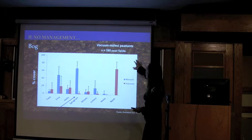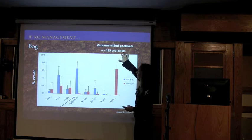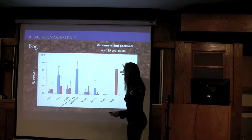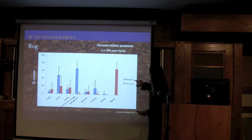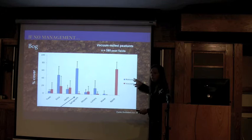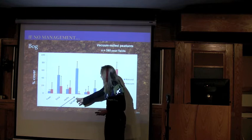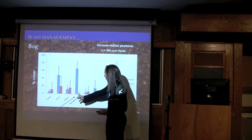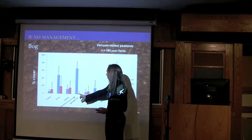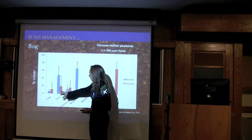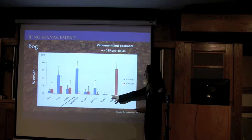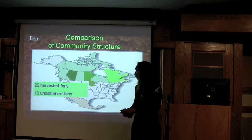We inventoried 395 abandoned peat fields across Canada, mostly in the eastern part where the industry is concentrated, and compared them to nearly 600 plots taken in natural peatlands across eastern Canada. In natural peatlands you find about 70-75% sphagnum coverage, whereas in abandoned fields there is barely any. The same disparity holds for ericaceous shrubs. In natural systems there is no bare peat, but abandoned fields are dominated by it.